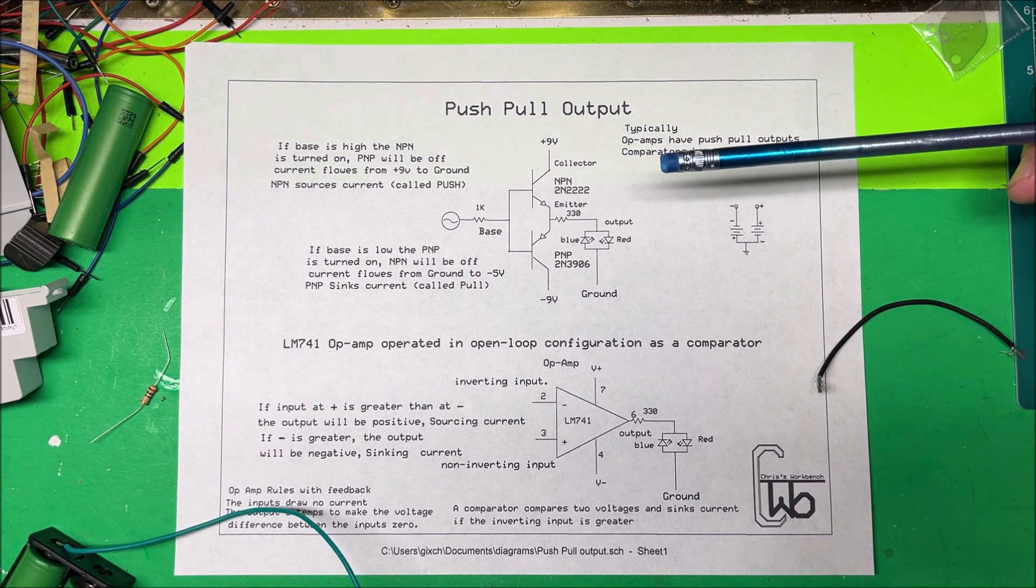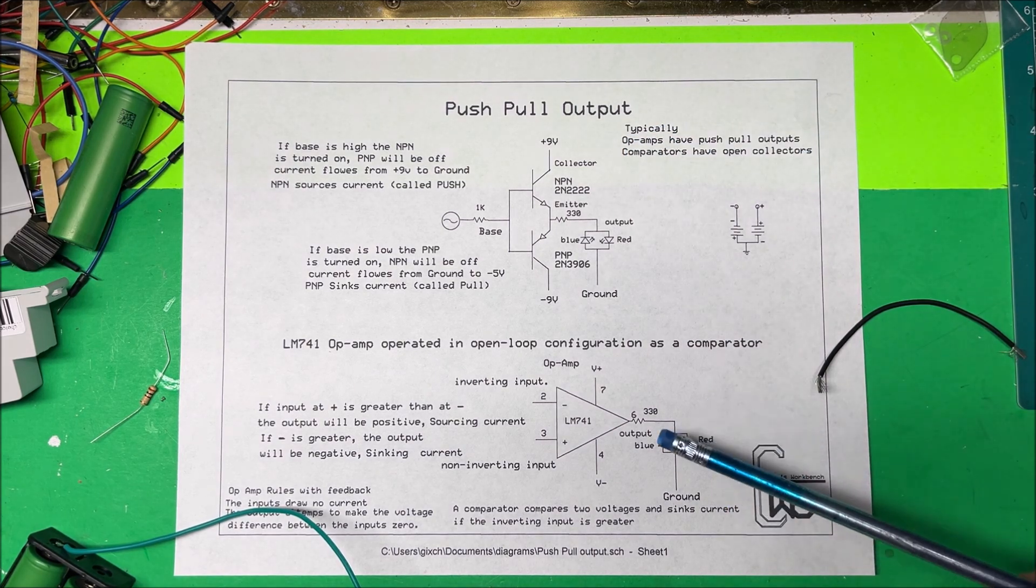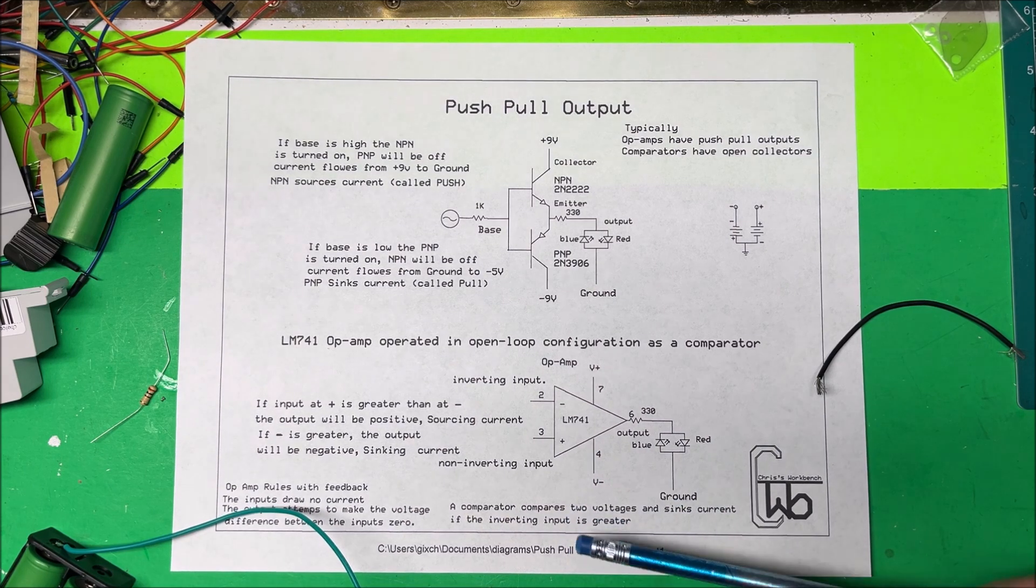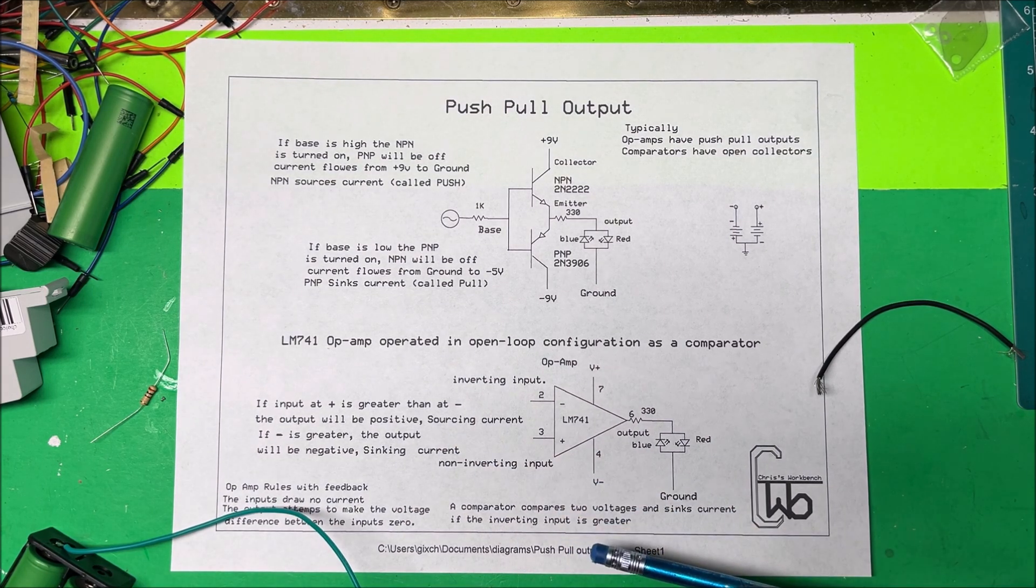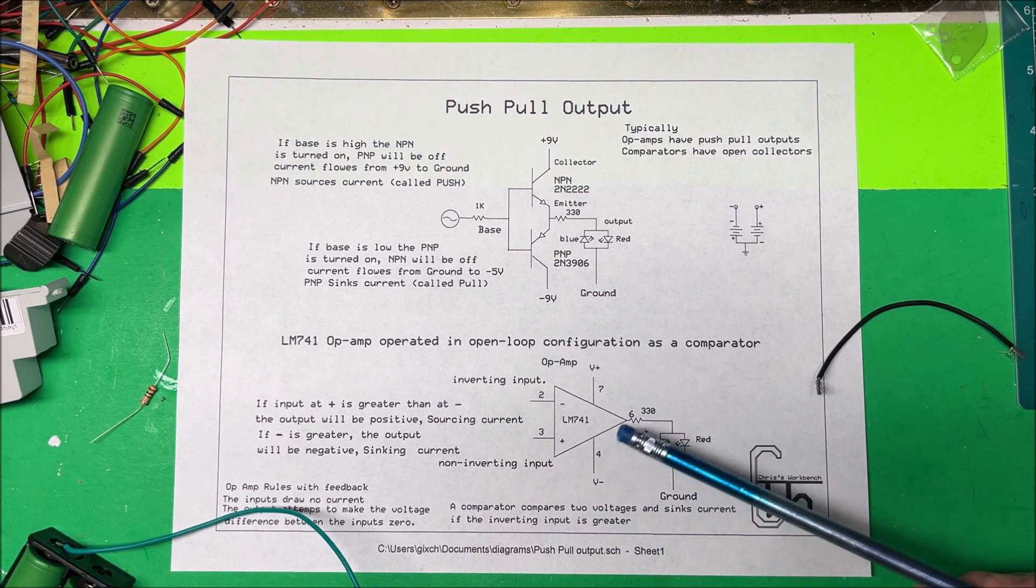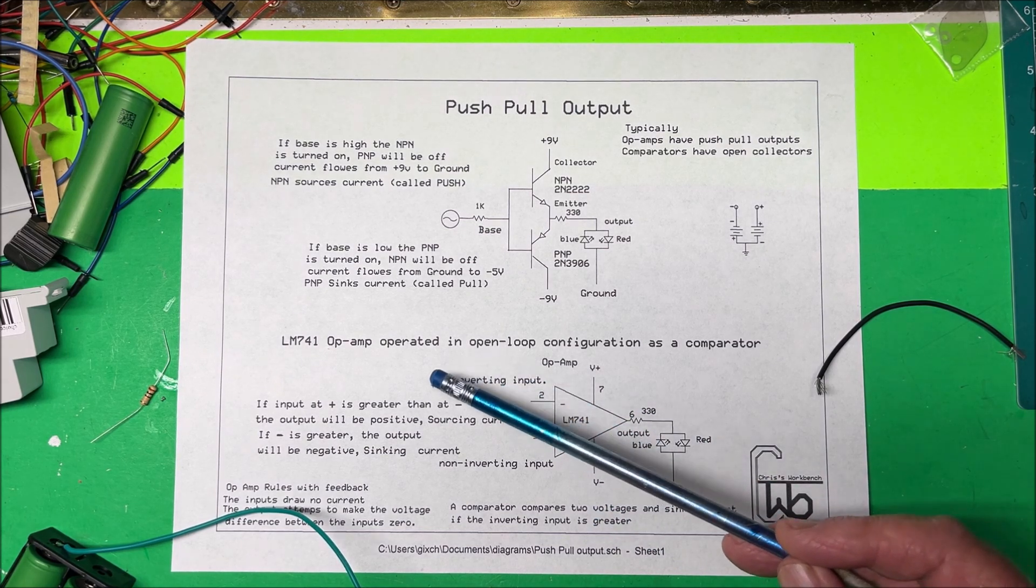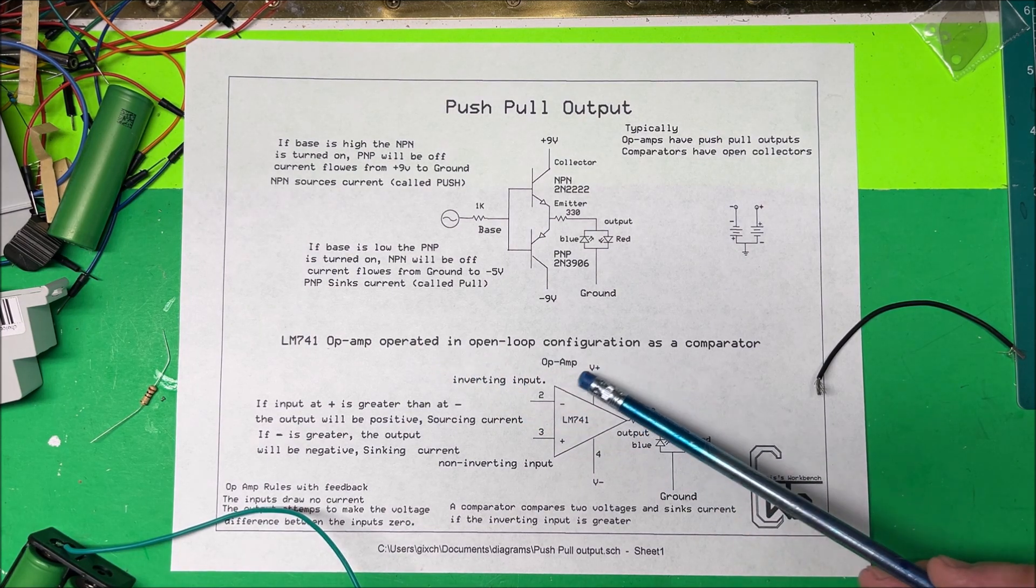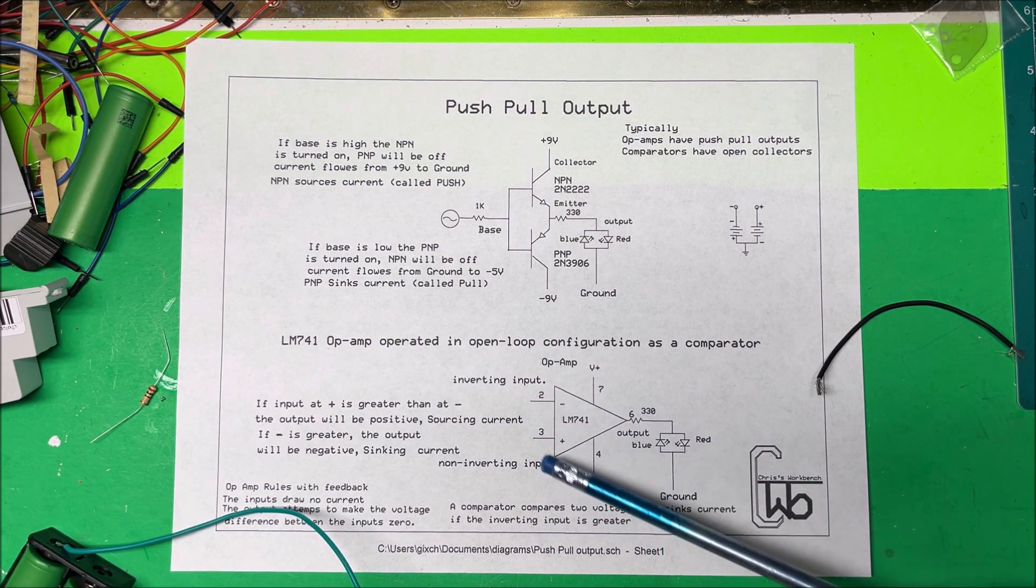And then I hooked up a little op amp just to show you how that works. This one's an LM741, just a little jellybean op amp. Now you can use these as comparators in the open loop configuration where we don't have any feedback on here at all, we just hook it up just like we would a comparator.